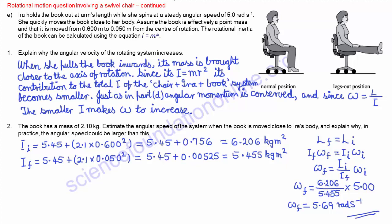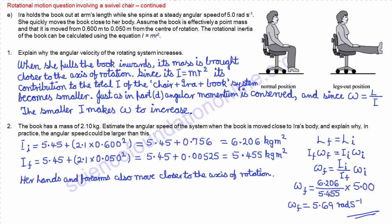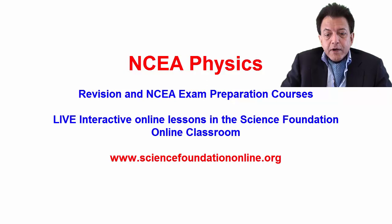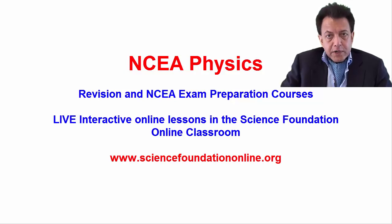Finally, we are asked to explain why in practice the angular speed could be larger than what we calculated. This is because her hands and forearms also move closer to the axis of rotation when she pulls the book towards her. So i final — the final moment of inertia of the whole system — is reduced by more than just from the book being brought closer. If i final is less than what we calculated, then omega final will be correspondingly even bigger. That should give you a good understanding of how to correctly answer an exam question involving rotational motion.